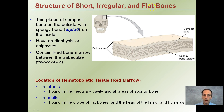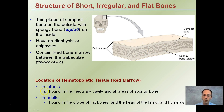The structure of short, irregular, and flat bones is a little different. They have thin plates of compact bone on the outside of spongy bone with the diploe on the inside. They have no diaphysis or epiphysis, and they contain red bone marrow between the trabeculae — the structures that give bone its spongy look. In infants red bone marrow is found in the medullary cavity, and in adults it is found in the diploe of flat bones, in the head of the femur, and also the humerus.